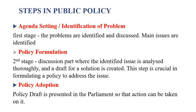अब आ जाते हैं public policy की process पर। Public policy making एक बहुत complex process है जिसमें काफी सारे steps involved होते हैं। सबसे पहला step है agenda setting और identification of the problem — पहली stage में problem को find out किया जाता है, यहीं से policy making start होती है। Problems को identify करने के बाद उन पर discussions होती हैं — इस step में NGOs की सहायता भी ली जा सकती है।